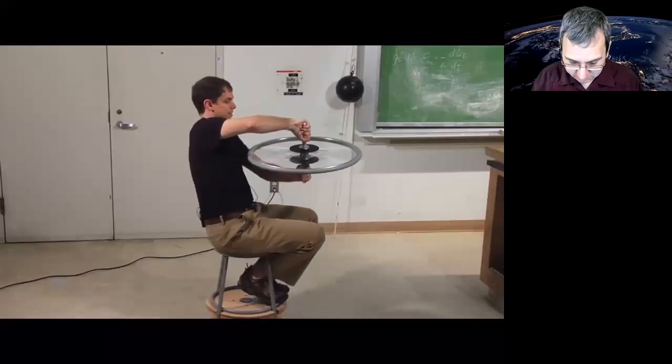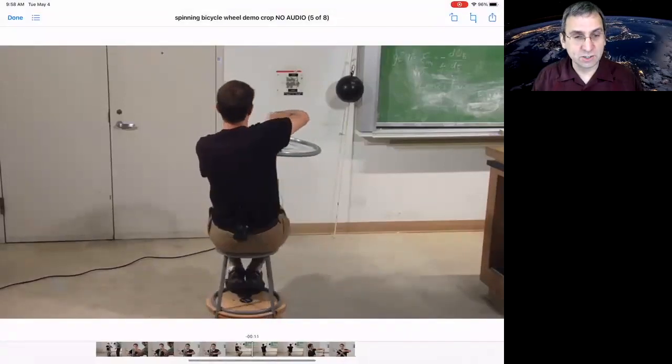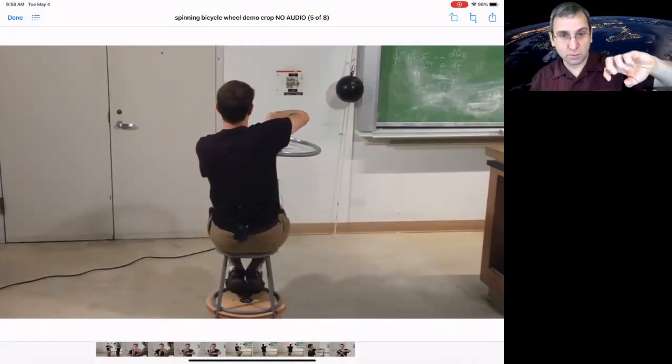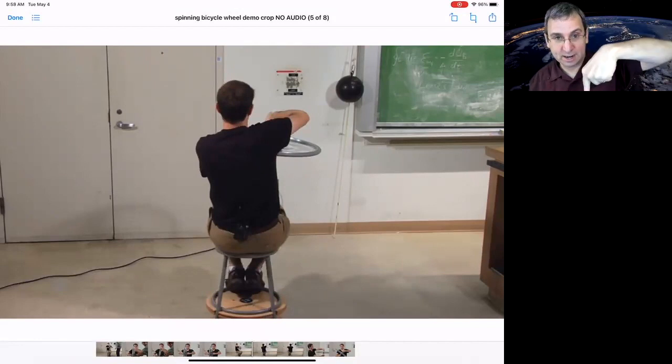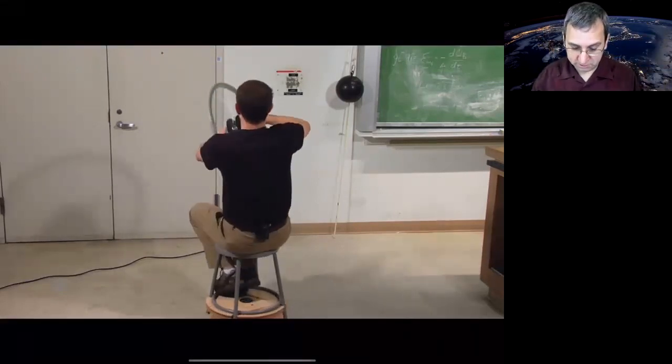Yeah, there we go. He's turning one way. And then he could actually flip the bicycle wheel over so that the angular momentum of the wheel is pointing up, and then the angular momentum for the person is pointing down. And he'd have to turn the other way, which is what he does here.